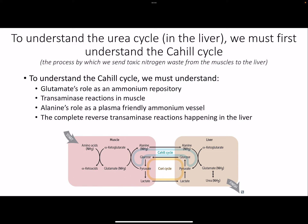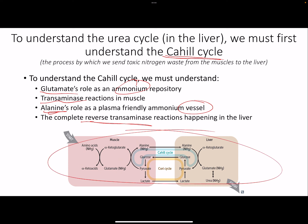The urea cycle happens in the liver. How do we get nitrogen there? It's through something called the Cahill cycle - this is how we get nitrogen from the muscles to the liver. To understand this, you need to understand how glutamate acts as a storage for ammonium, what a transamination reaction is, how alanine plays the role of a shuttle carrying nitrogen through the blood, and that transaminases are reversible.